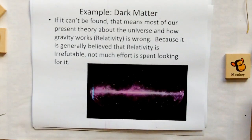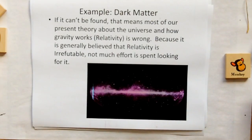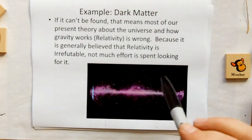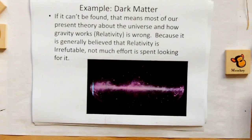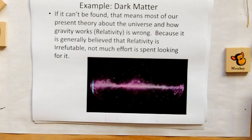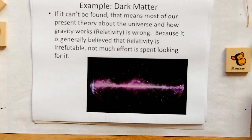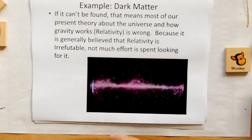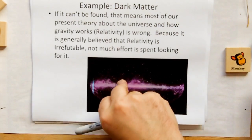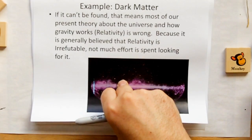Dark matter: if it can't be found — if there is no dark matter — that means most of our present theory about the universe and how gravity works, which includes relativity, is wrong. But because relativity is generally believed to be irrefutable, not much effort is spent looking for dark matter. They think we'll find it someday, let's not pay attention, it's no big deal. We're arrogant — we think we know everything.